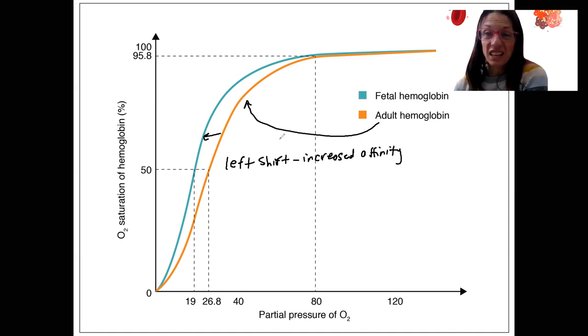So in order for the fetus to get enough oxygen, it's got to go from the adult to the fetus. There's got to be a higher affinity for the fetal hemoglobin for oxygen to transfer to the fetus.